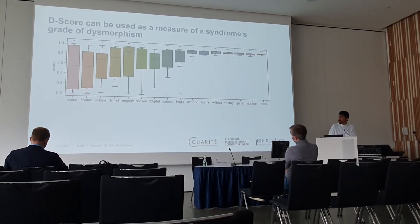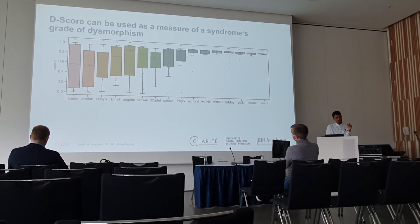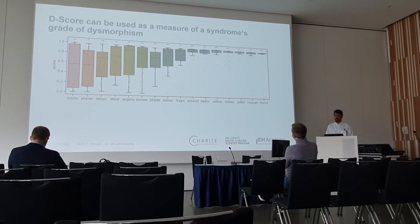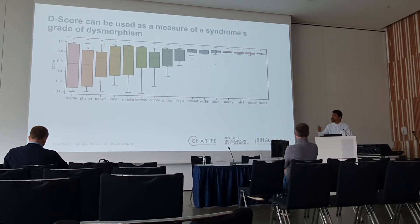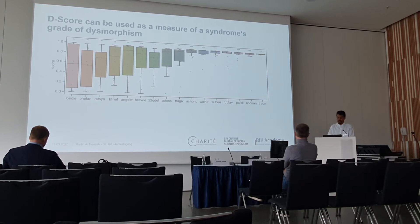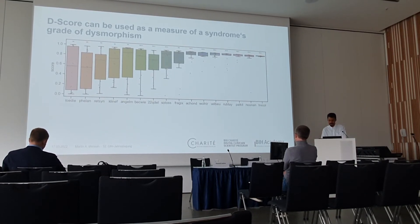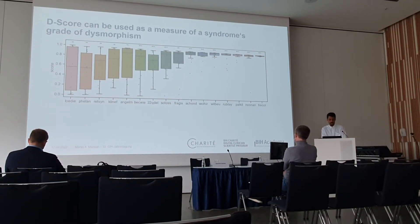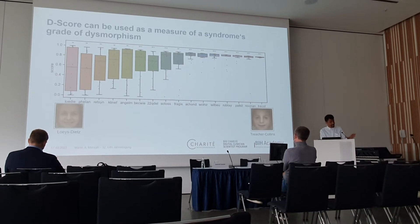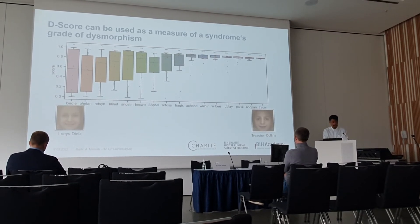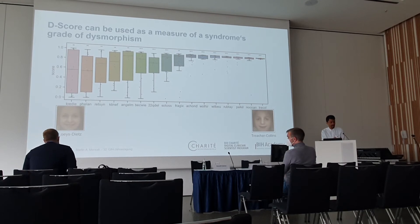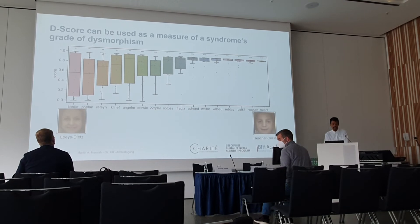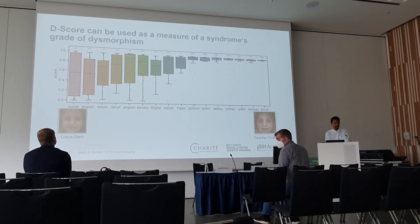What I really liked about the tool is that you can not only use it to rate an individual's degree of dysmorphism, but also to determine the degree of dysmorphism of an entire syndrome. Here you see the scores separated by the syndrome of the affected individuals, ordered by median value. Loeys-Dietz syndrome is at the left while Treacher Collins syndrome is at the right — exactly what we would expect, as Loeys-Dietz syndrome is rather mildly dysmorphic and Treacher Collins syndrome is very dysmorphic.